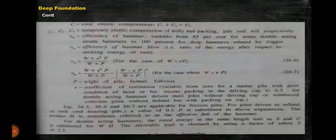In this slide, I have discussed about some conditions where W greater than EP and W less than EP. Here, C1, C2, C3 is constant temporary elastic compression of dolly, packing pile and soil respectively. Eta B equals efficiency of hammer and the formula of eta B equal to W plus E square P by W plus P minus W minus E square P by W plus P minus W minus EP by W plus P whole square, where P equals weight of pile or helmet and E equals coefficient of restitution.